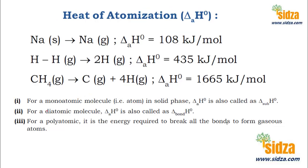For a monoatomic substance like sodium metal, which is in the solid state, if you want to convert it into the gaseous state, the heat of atomization can also be called the heat of sublimation. This is because sublimation is converting a substance from the solid directly to the gaseous state. So for a monoatomic solid substance, heat of atomization can also be treated as heat of sublimation.